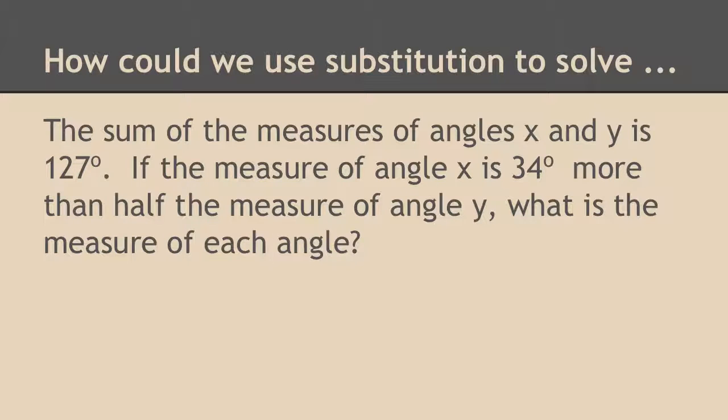On this one, I'm going to help you set it up, but then I want you to solve it without me. So it says, The sum of the measures of angles x and y is 127. So x plus y is 127. If the measure of x is 34 more than half y, what is the measure of each angle? So I have my system set up right here.